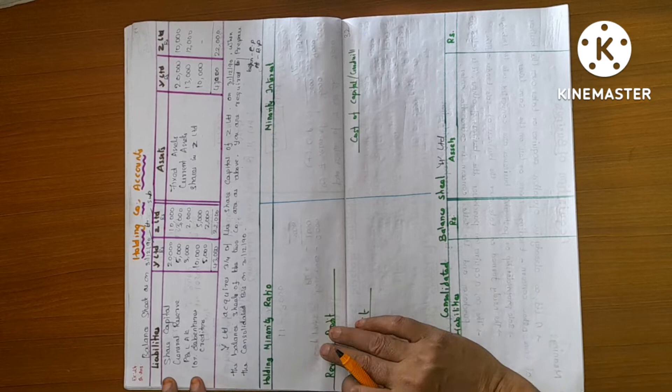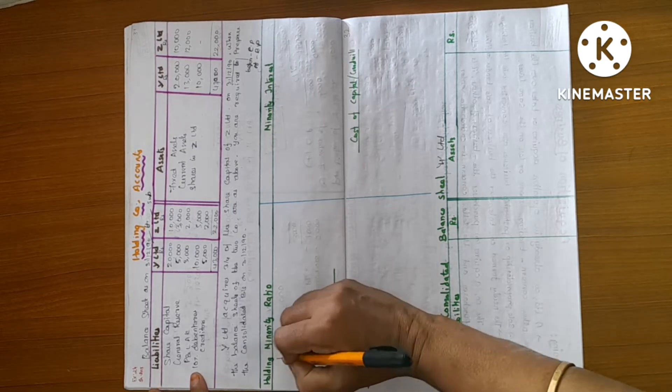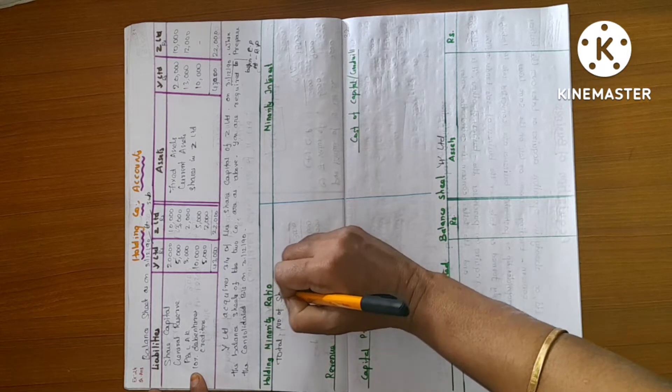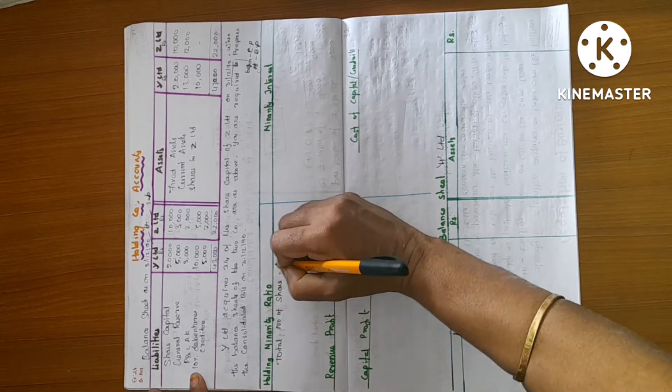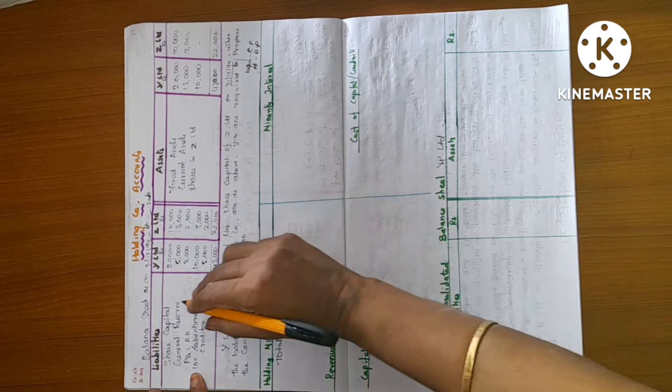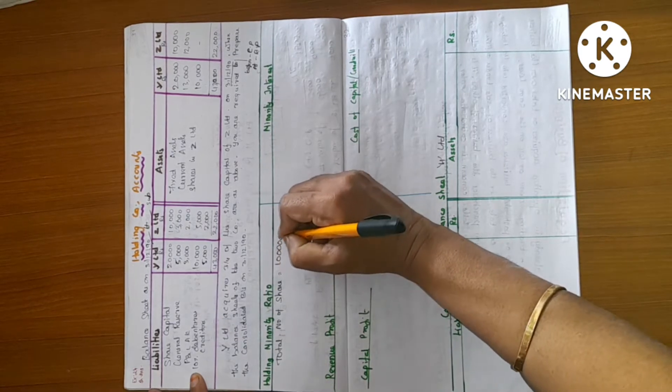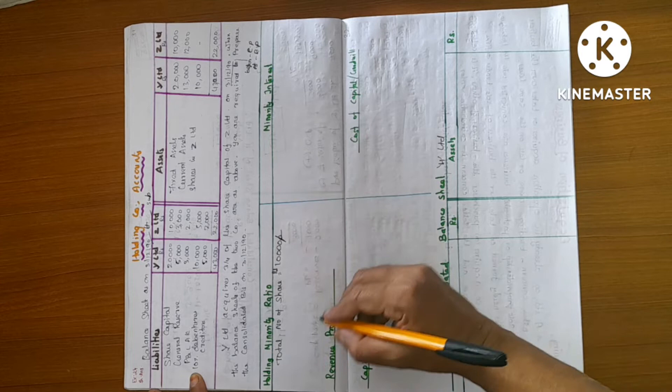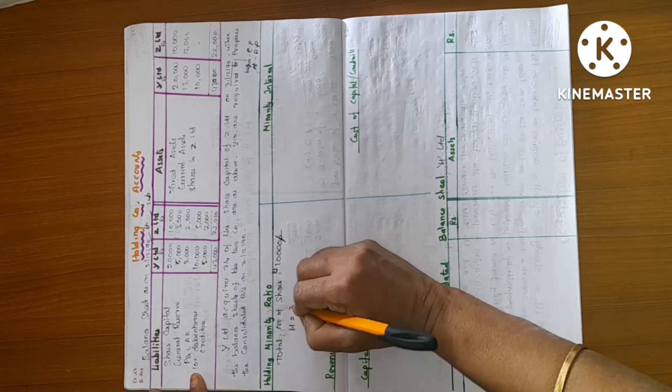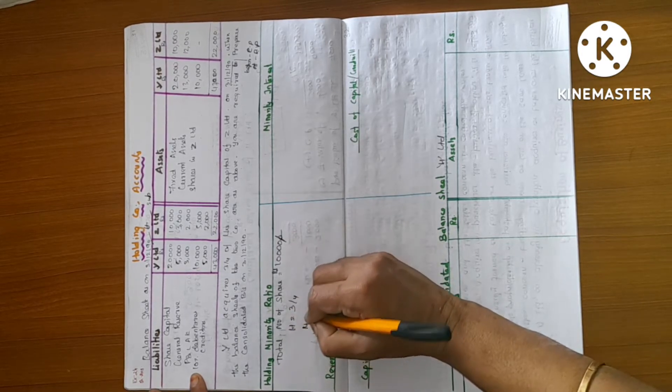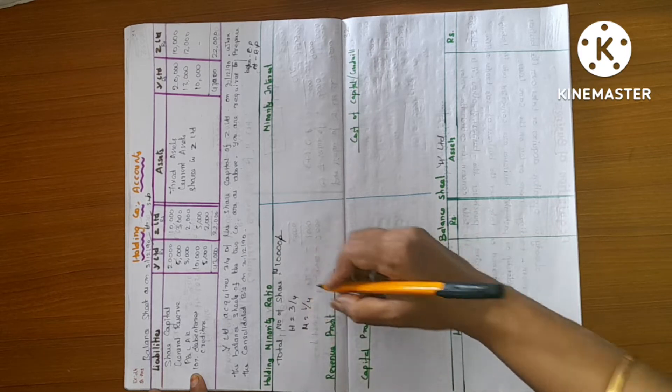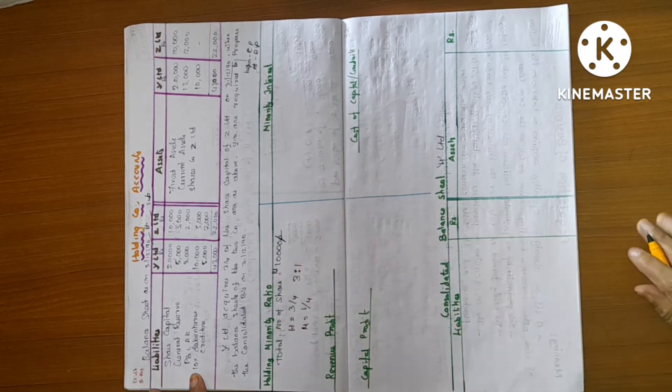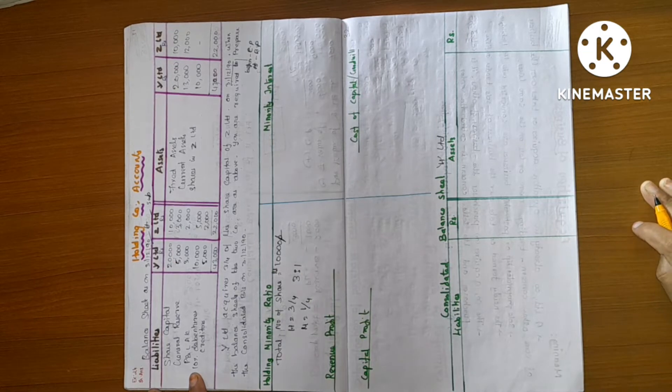First, holding companies ratios. Total number of shares. Where are you? 10,000. This is 10,000 value, per share price. What is holding? 3/4th. Minority is 1/4th. Ratio is 3 to 1. Holding minority ratio is 3 to 1.